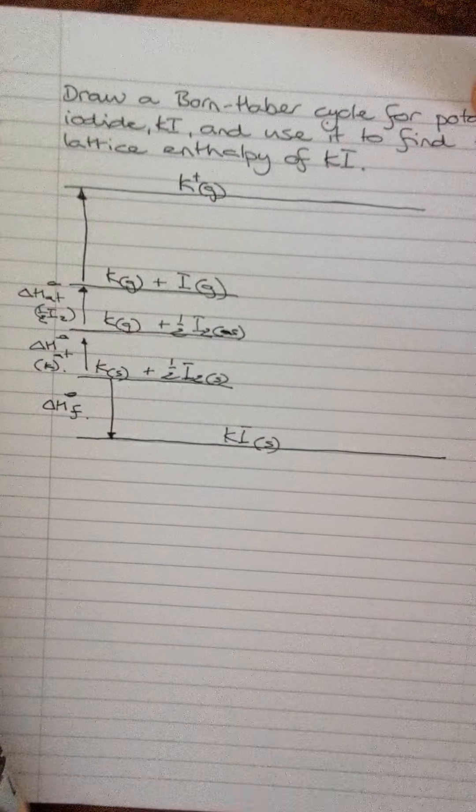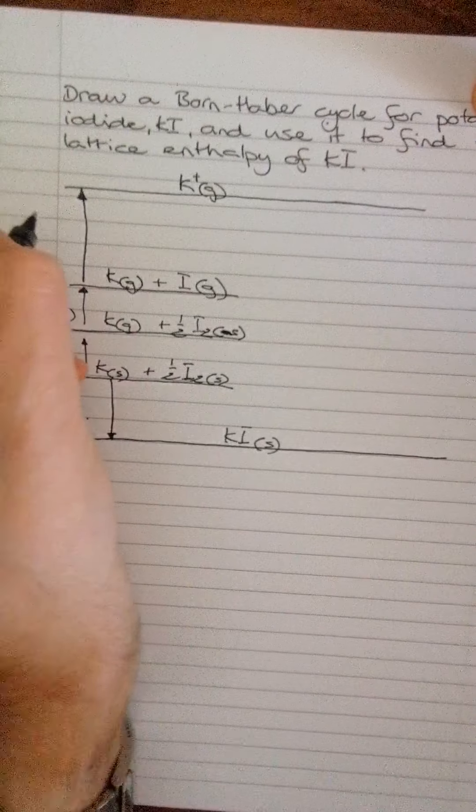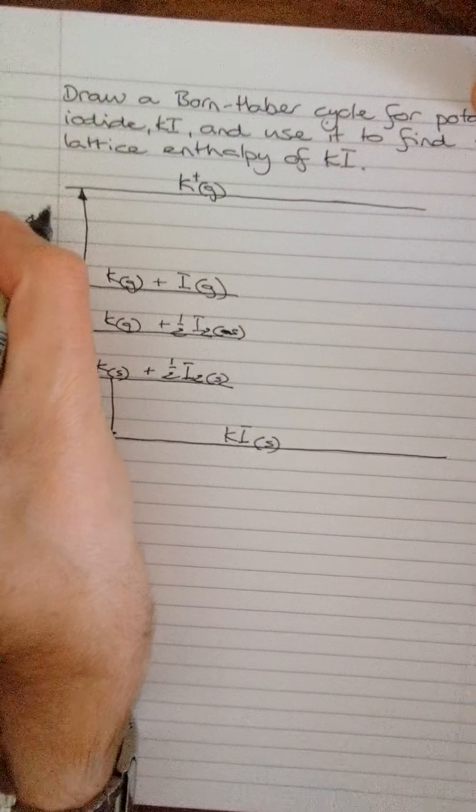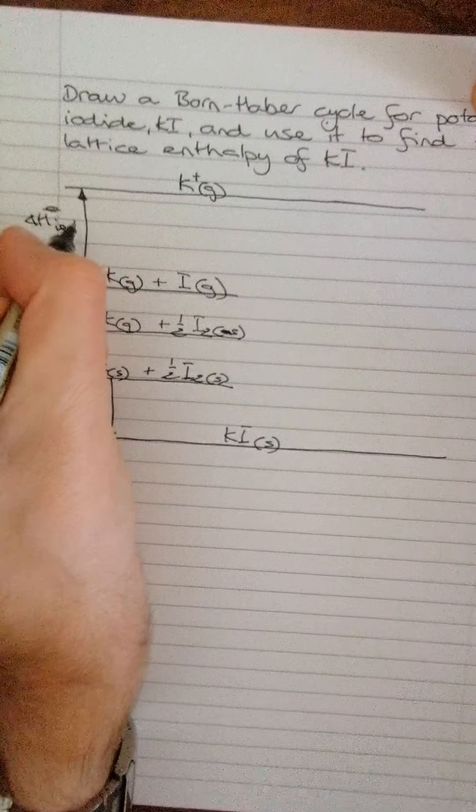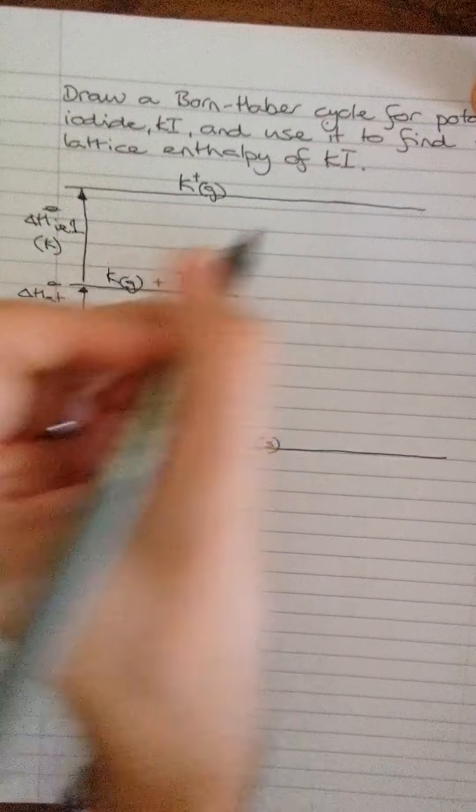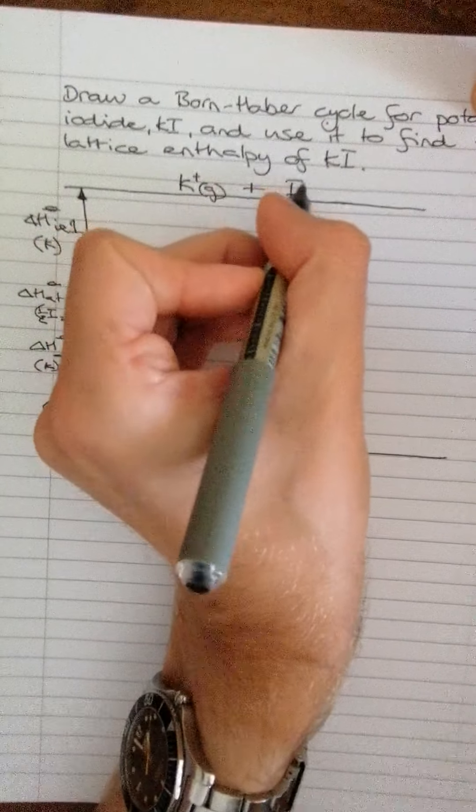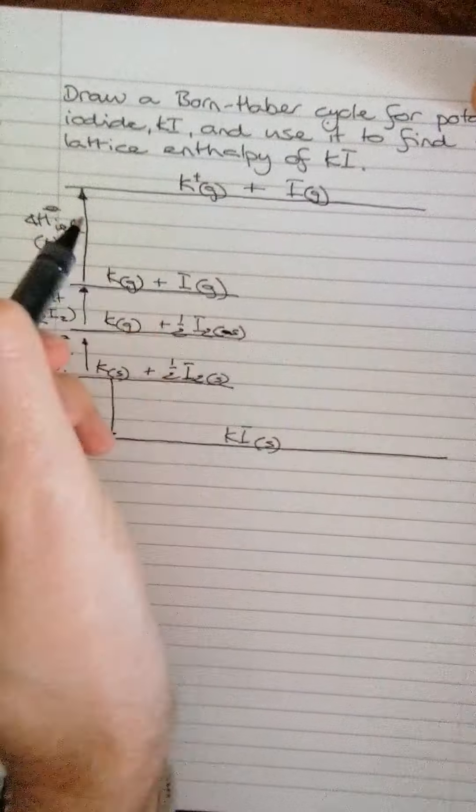Some people write the electrons into their cycles. I don't actually, but you can choose to do that if you wish. So this is delta H standard ionization energy one for potassium. Okay. So it changes it to K plus plus I gas. Okay.